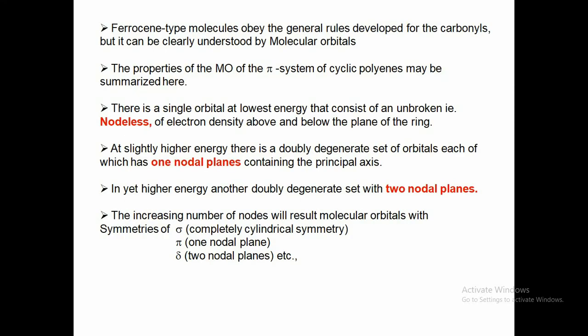Ferrocene-type molecules obey the general rules developed for metal carbonyls. For metal carbonyls, the bonding mechanism is a synergic mechanism: the ligand donates electrons to the metal forming a sigma bond. If the metal has higher electron density, it back-donates to the pi-star orbital of the carbonyl carbon, forming sigma and pi bonding. Sigma bonding enhances pi bonding and pi bonding enhances sigma bonding — both are possible in this synergic mechanism.